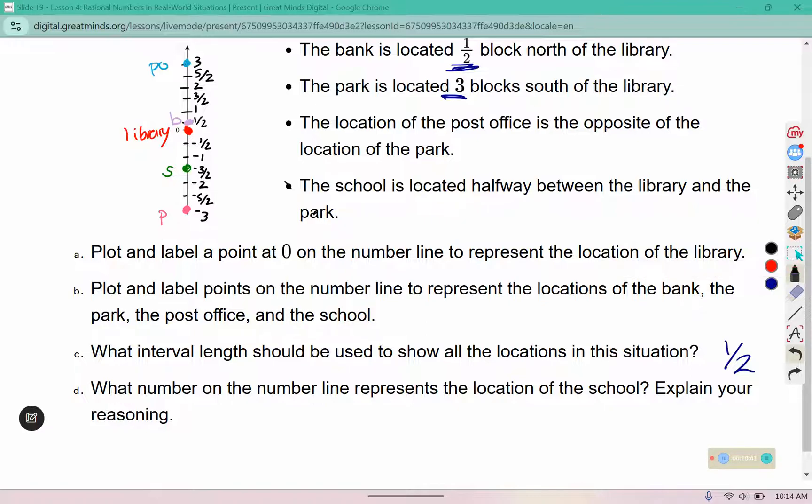D asks, what number on the number line represents the location of the school? That was negative three halves, and explain your reasoning. Well, what is half of negative three? Well, half of negative three would be negative three split into two parts, which is negative three over two. Or you can think of it as negative 1.5, but we used fractions instead of decimals.